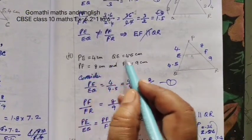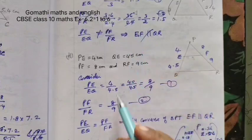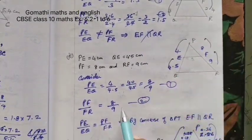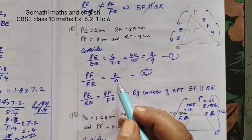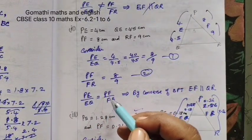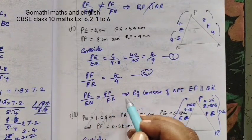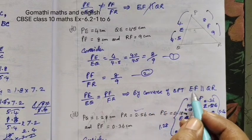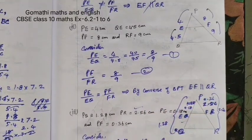Now the next one, 4 values given. Similarly, the same type. This by this equal to this by this. Here 1 and 2 equal. Since the given ratios are equal, by converse of BPT, EF parallel to QR.